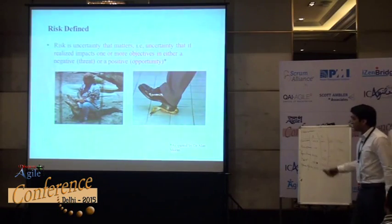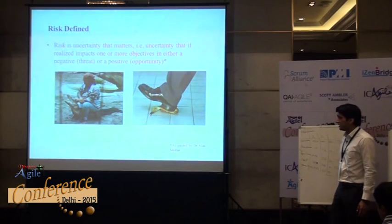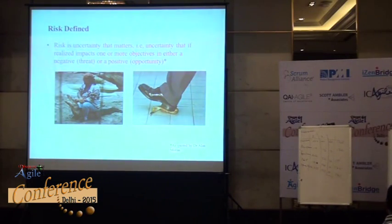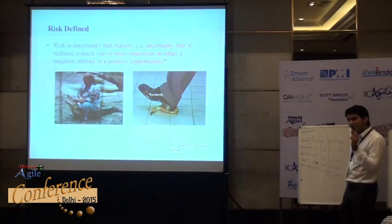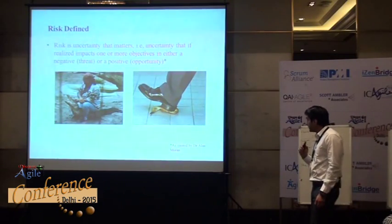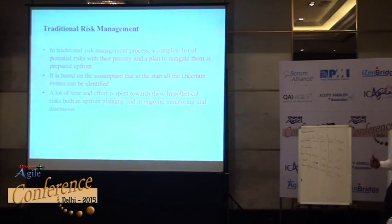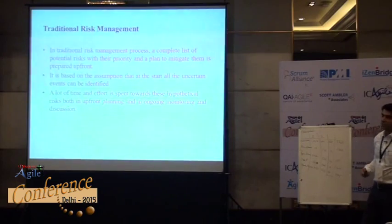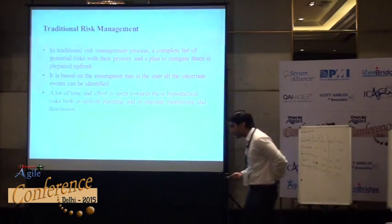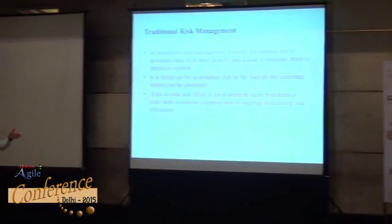As quoted by Dr. Alan Moran, that's the concise definition I could find: risk is an uncertainty that, if realized, impacts one or more objectives in a negative or positive way. May I ask how many of you are from a PMI background? Okay, there are many. Do these things sound familiar — traditional risk management in a non-agile project?